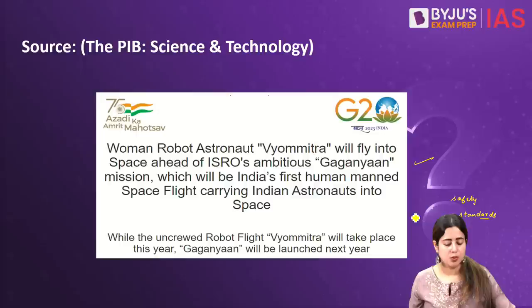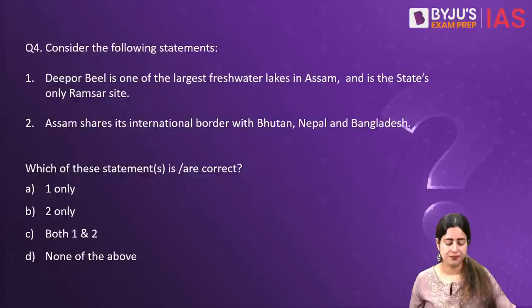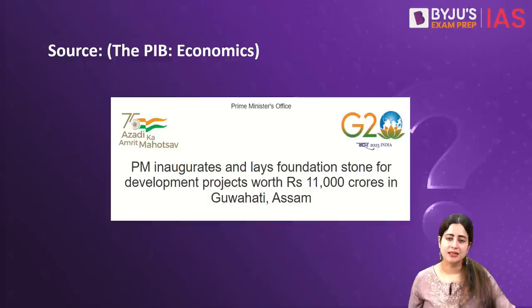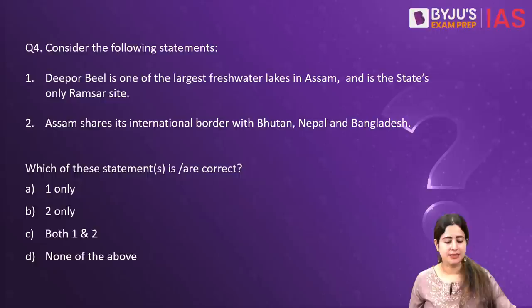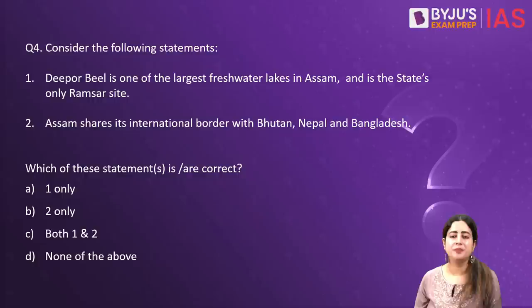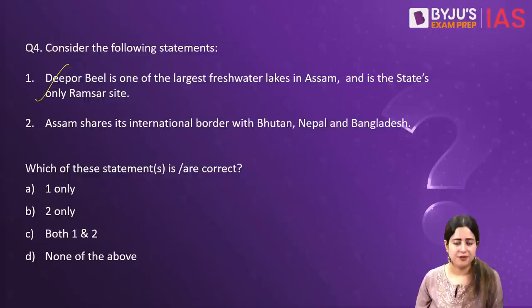The fourth question talks about wetlands. Why was it taken up for analysis today? In light of a PIB release saying that the Honourable Prime Minister has inaugurated and laid a foundation for a massive ambitious range of development projects to be initiated near Guwahati in Assam, with a corpus fund of more than 11,000 crore rupees. In this backdrop of Assam, the first statement says Deepor Beel is one of the largest freshwater lakes in Assam and the state's only Ramsar site.